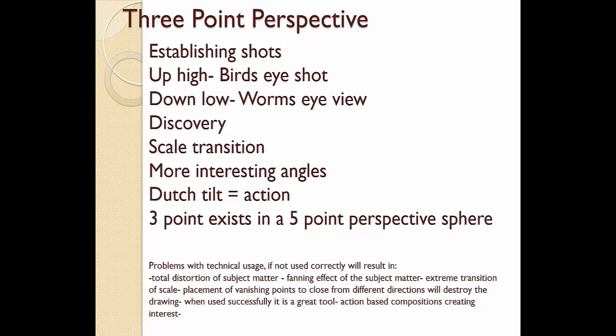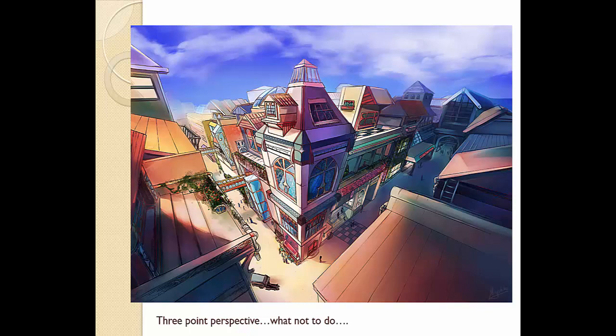Now let's look at what NOT to do. Here's an example found online — the problem is the subject matter is too large. Look: one vanishing point is on my right, one on my left, and the third point is receding down about three inches past the monitor. The vanishing points are too close — that's the fan effect. Everything is fanned out and totally distorted. It doesn't look right.